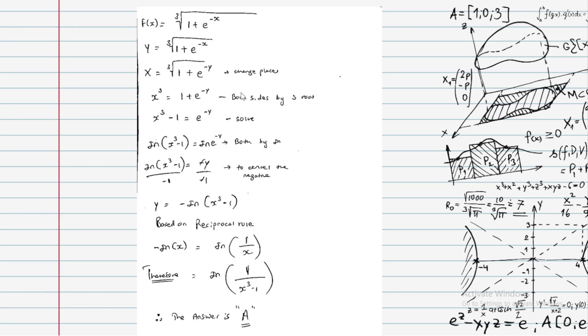Raise both sides to the power of 3. Left side becomes x cubed. Both sides cubed: x cubed equals 1 plus e to the power of minus y.